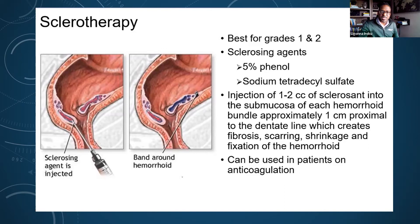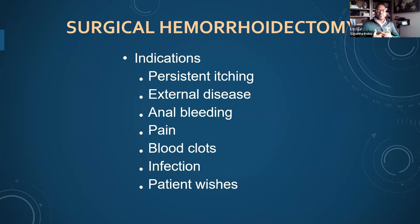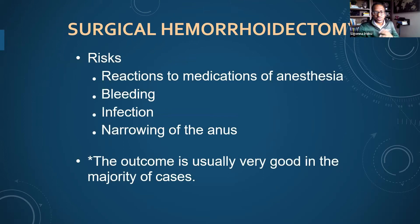For people who have persistent symptoms — whether itchiness, bleeding, pain, blood clots, infections, or external hemorrhoid involvement — sometimes it is time to proceed to the surgeon for surgical therapy called hemorrhoidectomy. The risks include anesthesia, bleeding, infection, and scarring of the area due to surgery. Usually patients have great outcomes when they need surgical management.